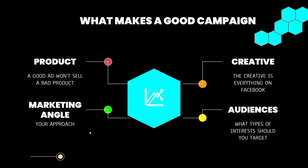The fourth key factor that makes a good campaign is the marketing angle — your approach. A marketing angle could be something emotional like 'say goodbye to blackheads, you've been struggling too long, you deserve better.' Or it could be aggressive: 'it's time to take control of your life.' Or it could be funny. There are so many different approaches. The important thing is that the marketing angle matches the creative, and the creative matches the audience.